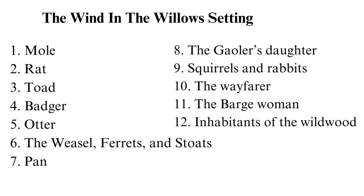The squirrels and rabbits are usually pleasant characters, but the rabbits are often called a mixed lot. The Wayfarer is a sea-traveling vagabond rat who tries to convince Rat to travel with him. The Bargewoman is the owner of the barge and horse which Toad steals — at first Toad seeks her help, but she throws him out of the barge when she realizes he is a toad. The Inhabitants of the Wildwood are untrustworthy members of the wood.